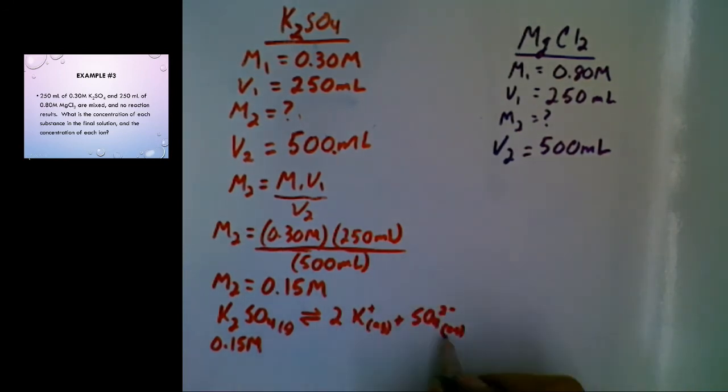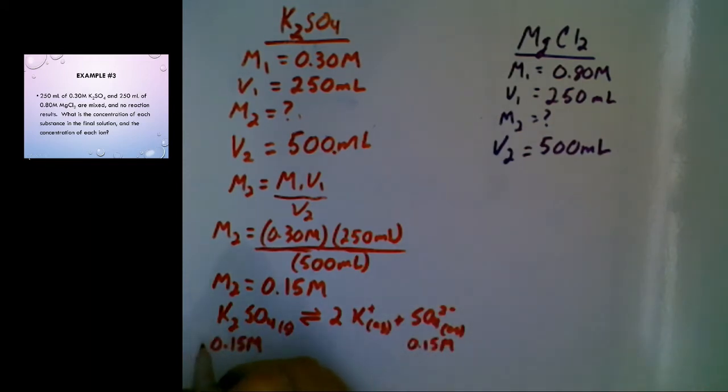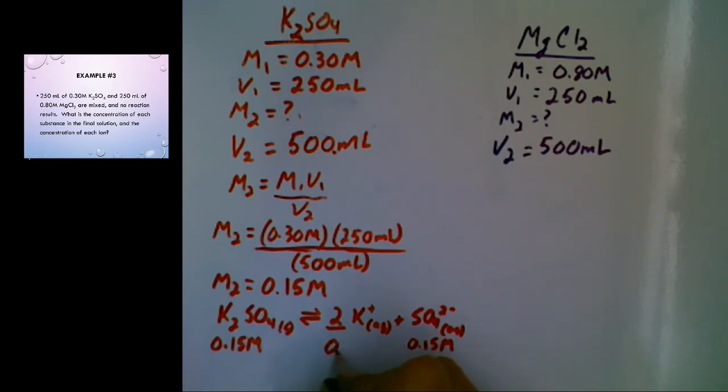So the concentration of sulfate would be the same, 0.15 molarity, because of the one-to-one ratio. The concentration of potassium ions would be 0.30 because there is twice as many as there is for each potassium sulfate. So my concentration of potassium ions is 0.30 molarity. My potassium sulfate ions is 0.15 molarity.